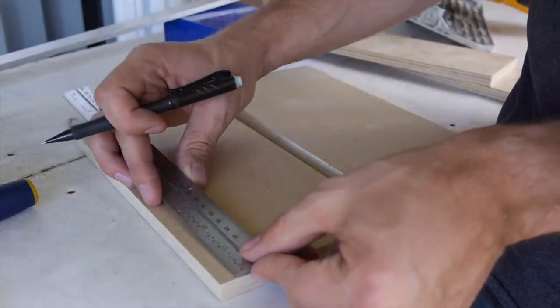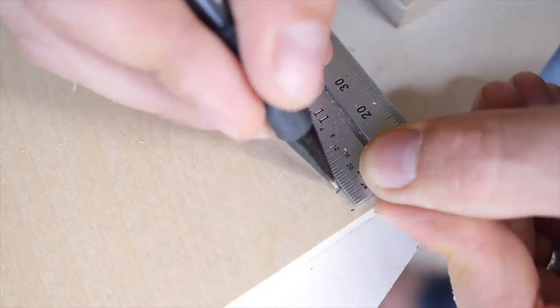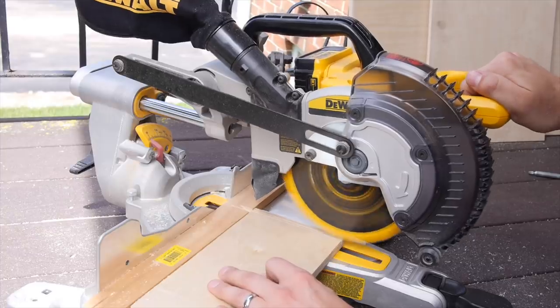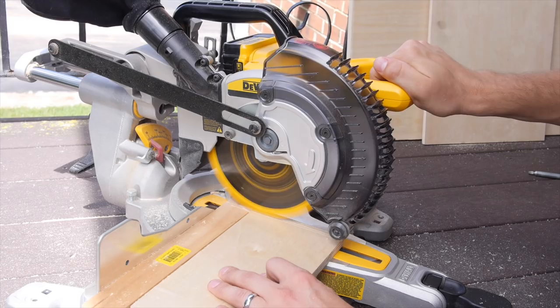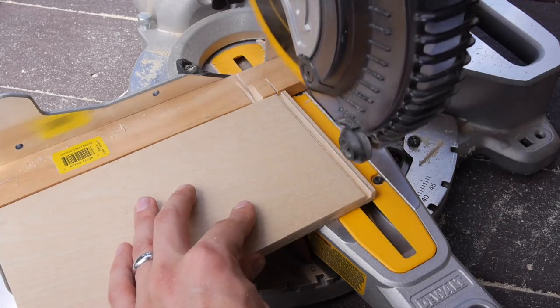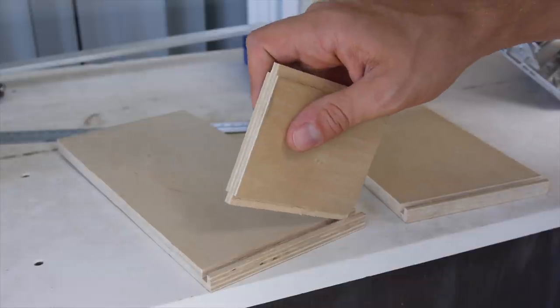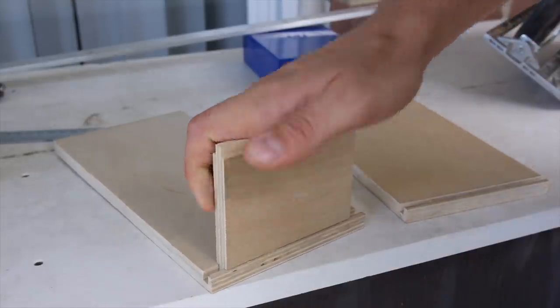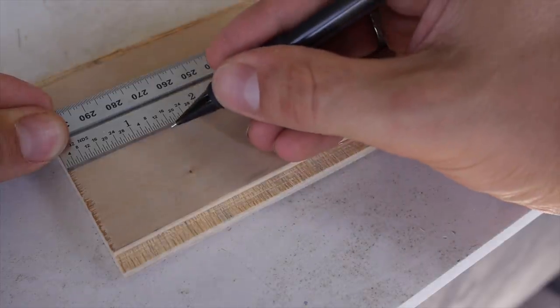Next I prepared to cut the slots which will allow the bottom piece to slide. These slots are cut the same way as before but they're set inboard from the bottom of the piece by about an eighth of an inch. With the slots cut, you can see how the bottom piece fits into the sides.